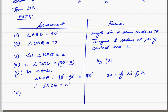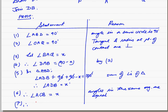Now if this is x, this is also x. Therefore angle ACB is x. Angles in the same segment. Hence proved.